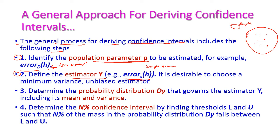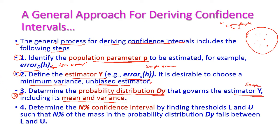It is described to choose a minimum variance unbiased estimator — the variance should be minimum and there should not be any bias in the estimator. Third, determine the probability distribution dy that governs the estimator y, including its mean and variance. This distribution dy is nothing but the sample, and the mean and variance of that sample should be almost equal to the mean and variance of the entire population.